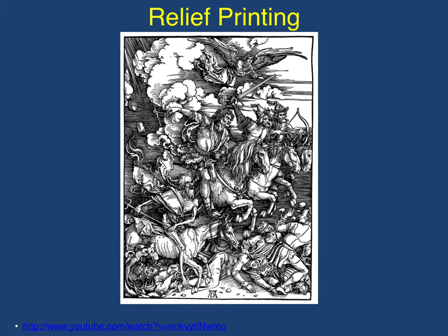The first is relief printing, which includes woodcut, wood engraving, and linoleum cut. There is also a clip you can look at which shows how this is actually created. In relief printing, you have your surface and you cut away the non-image areas. The areas that are left are raised, then inked, and pressed into paper — think of it as a rubber stamp where the part that stamps is the raised surface. What you're looking at here is a work by Albrecht Dürer: the Four Horsemen of the Apocalypse, a woodcut.